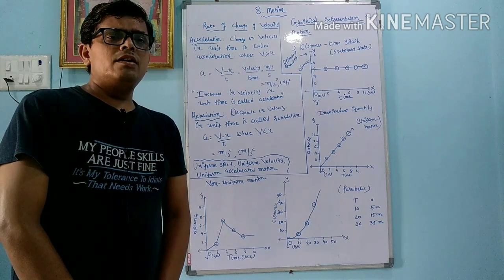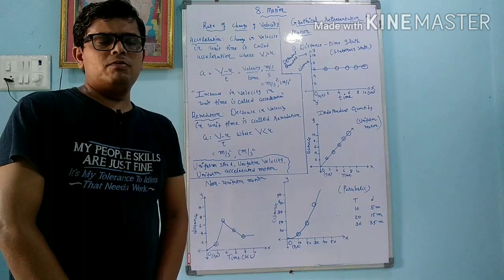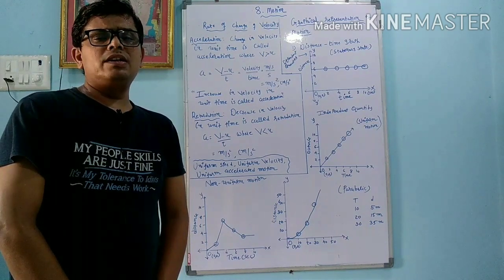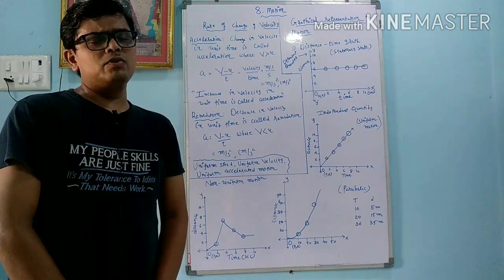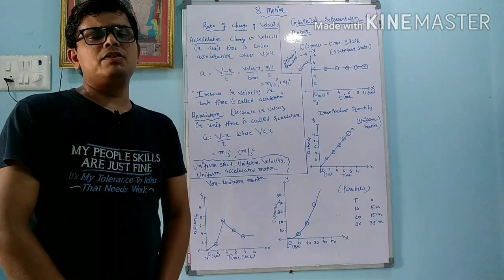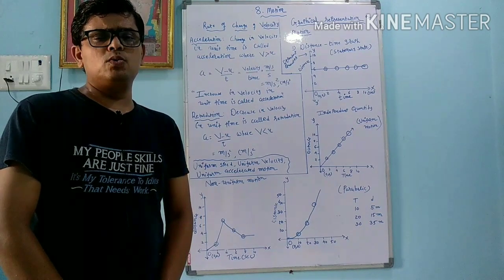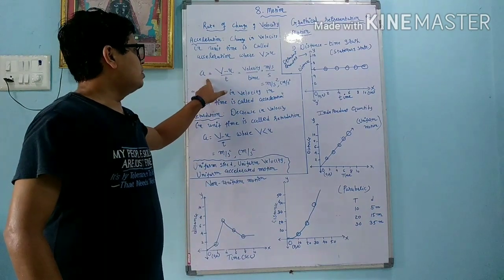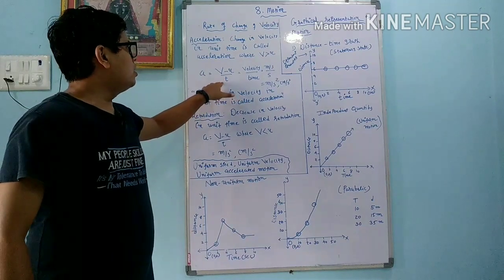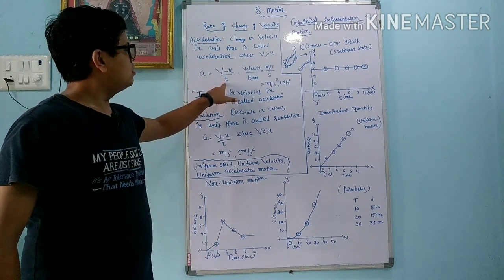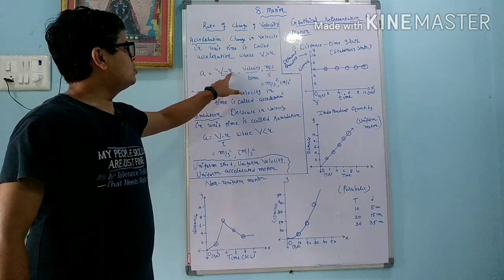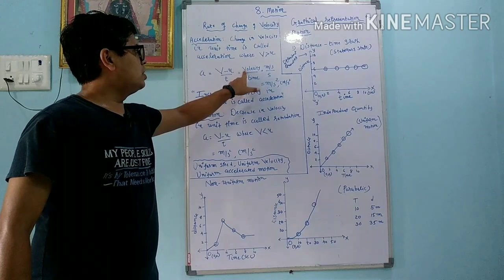Initially my velocity is less, represented as u. Whenever I am on a bike, initially my velocity is less u. After some time my velocity is increased, so my final velocity is v. So velocity is increased, v is greater than u. At that time, acceleration a equals v minus u divided by t — the change in velocity in unit time. Here v is the final velocity and u is the initial velocity, and since v is greater than u, these values are positive.